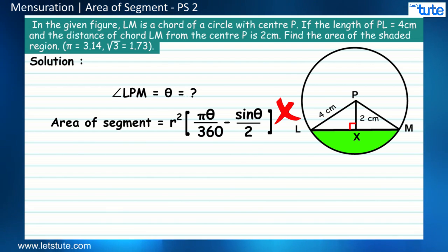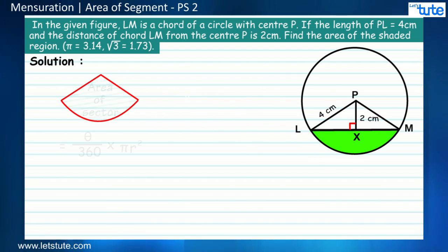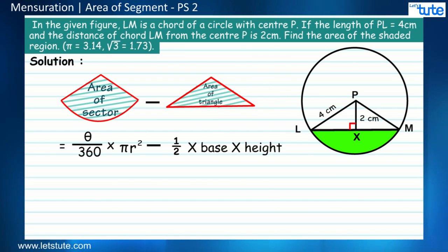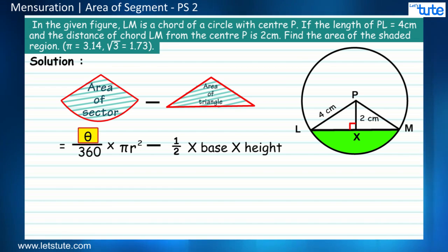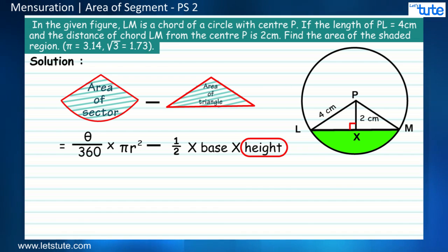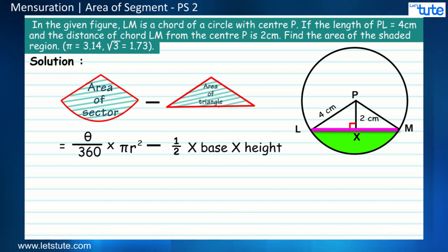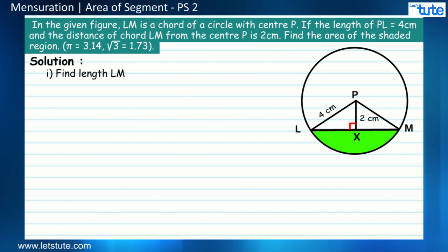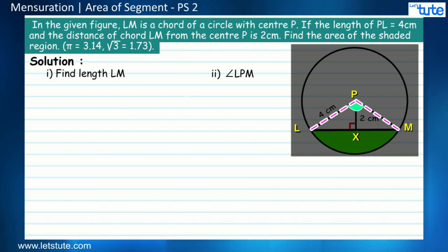You might say: let's find the area of the sector and subtract the area of the triangle from it. Yes, that can be done. To find the area of the sector, we would need the value of theta, and to find the area of the triangle, we know the height — which is the distance of the chord from the center, that is length PX. If we find the value of chord LM as the base, our first task is to find the length of chord LM and the value of angle LPM, that is theta.